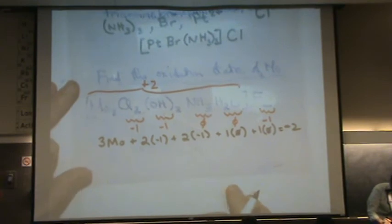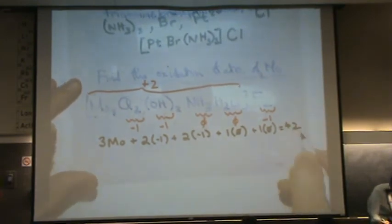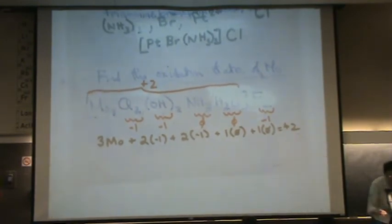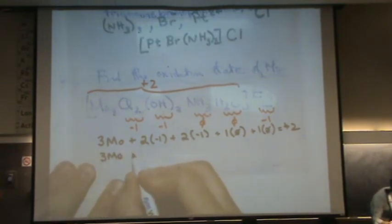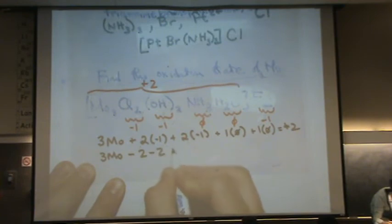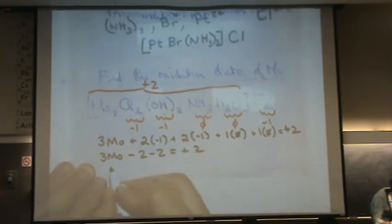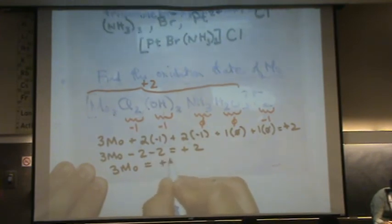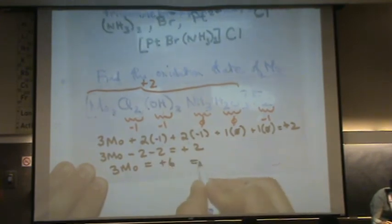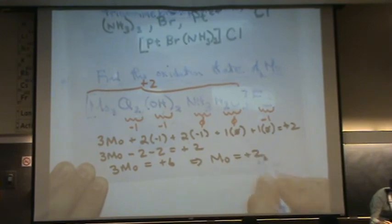Plus two. Three Mo's equal minus two, minus another two, equals an overall charge of plus two. So three Mo's equals plus six, or Mo equals plus two.